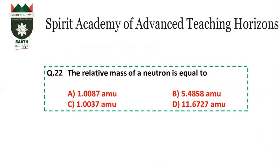Question number 22: Relative mass of a neutron. You must remember this — the relative mass of a neutron is 1 (approximately 1 atomic mass unit). The answer is A.